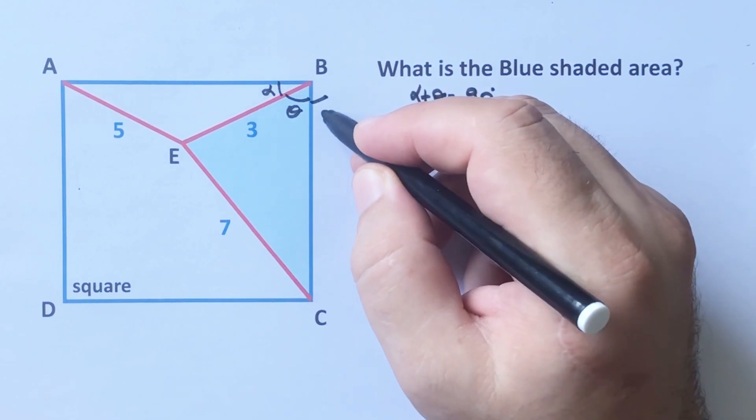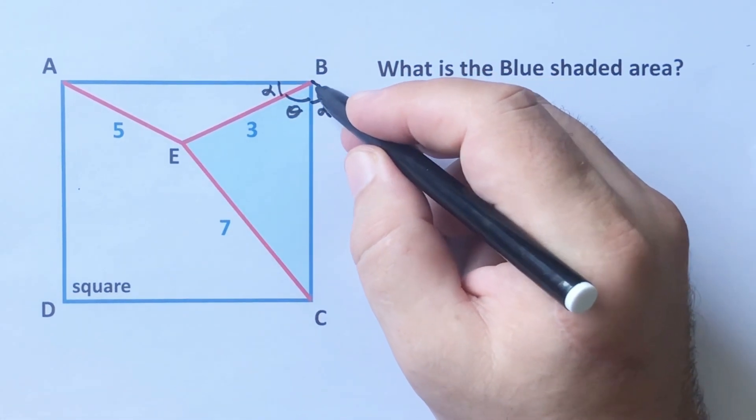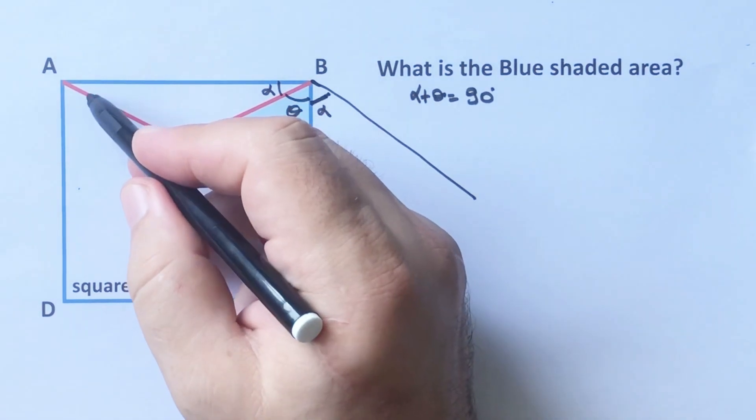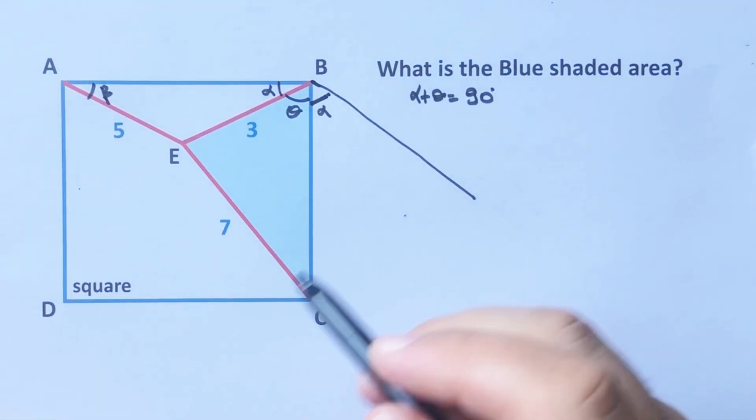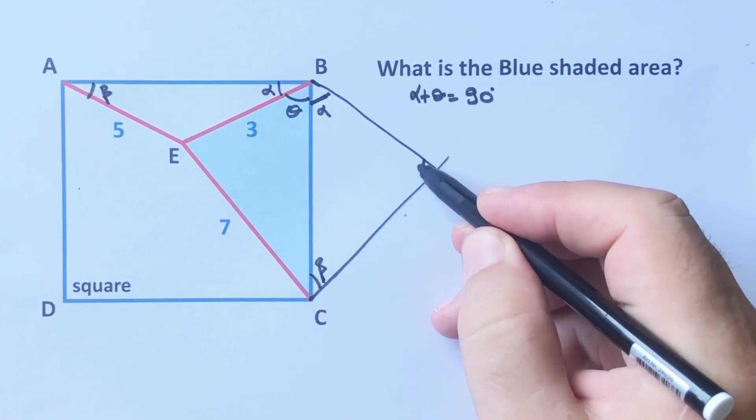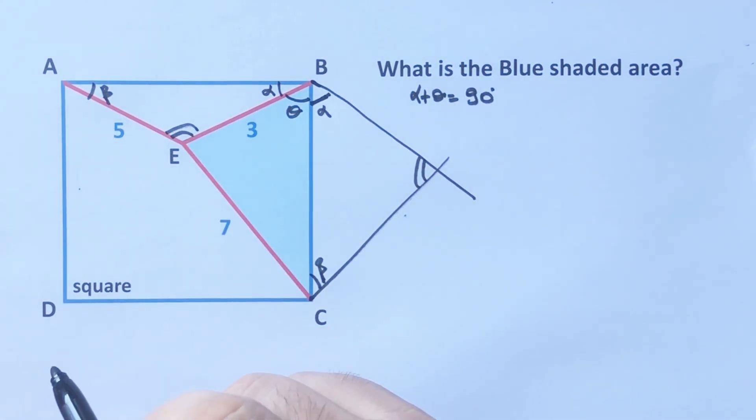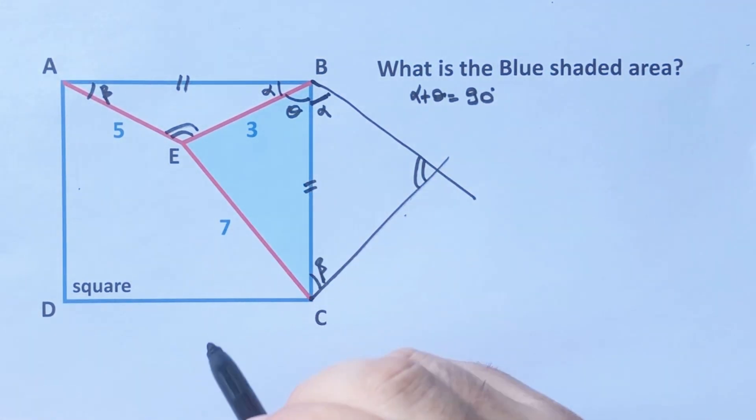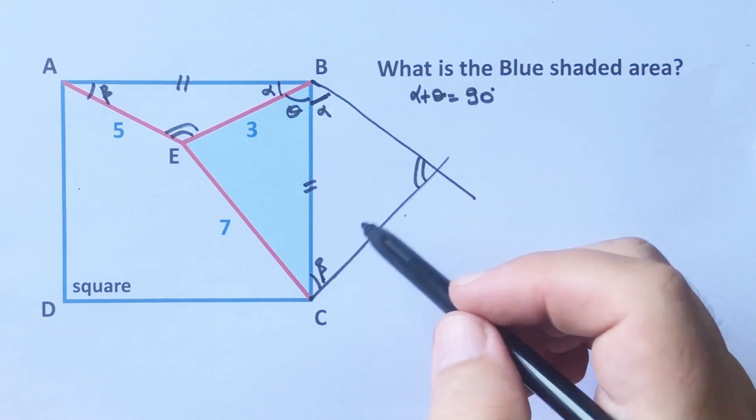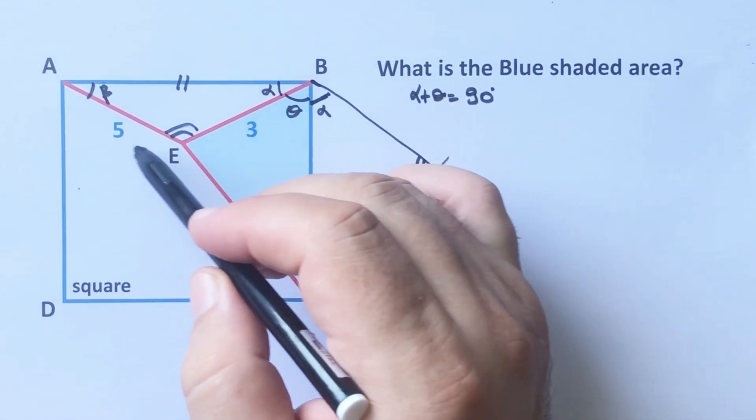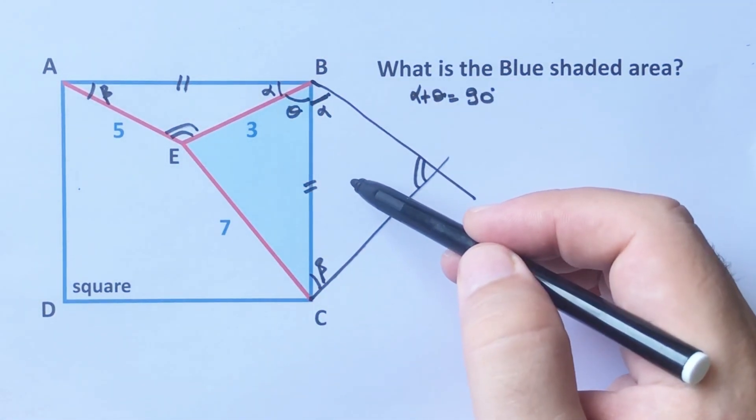And then if we take here alpha degrees like this, and let's call here beta, and if we take here beta degrees. And then I want to represent with double line the third angle. Notice that opposite of the third angle are same side, right? That means these are congruent triangles. Or you can think like this: we can move this triangle to this side.